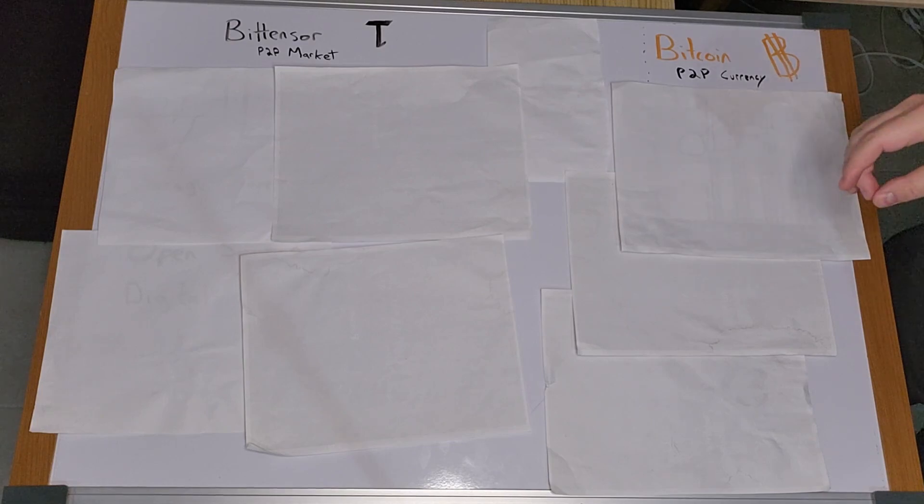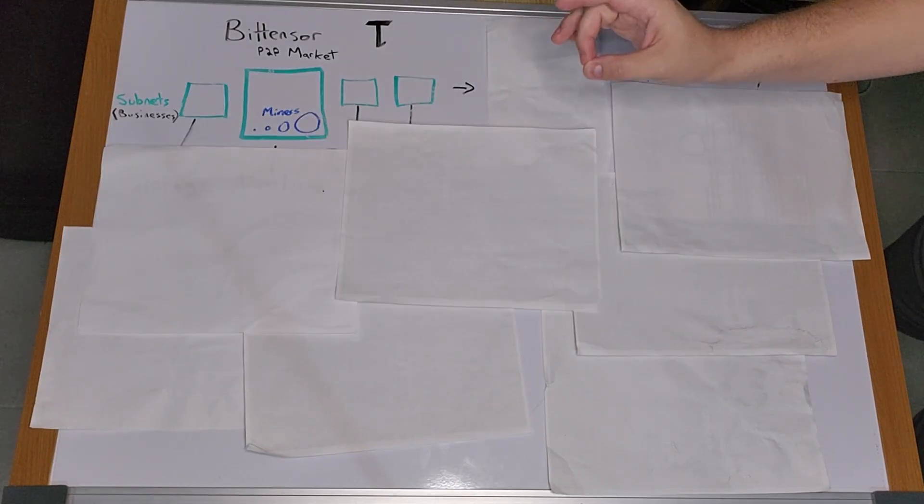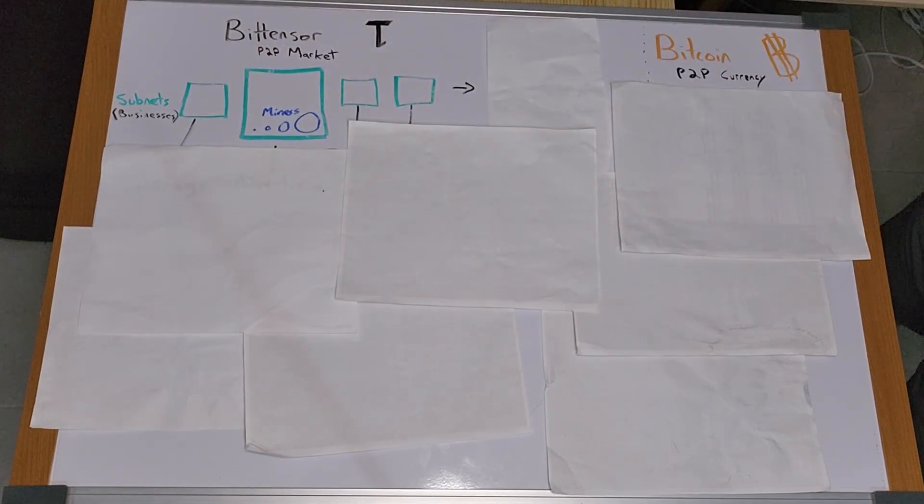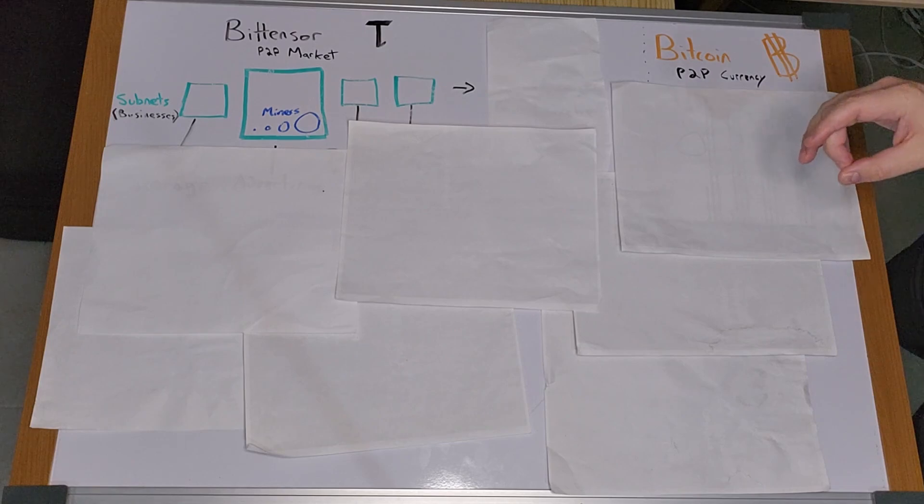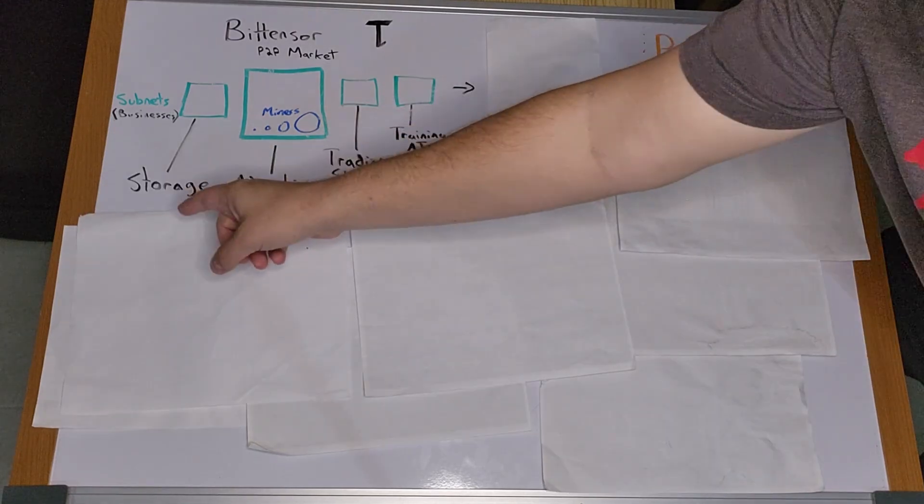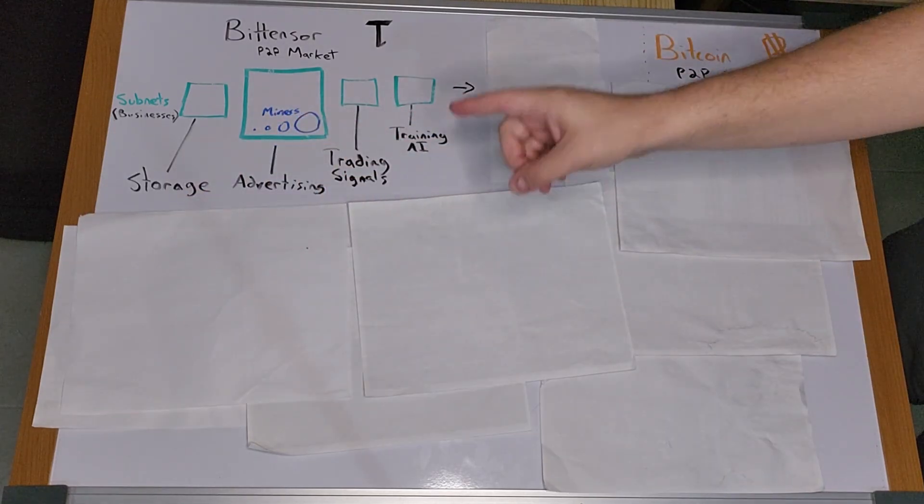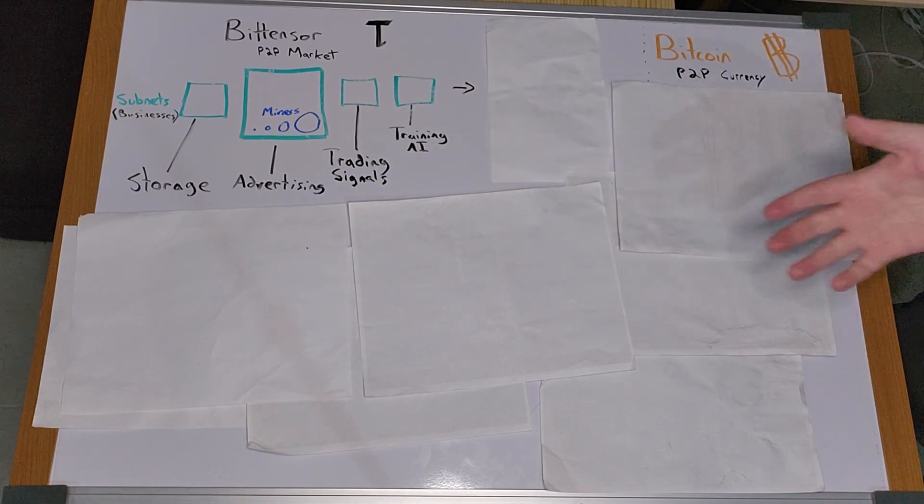Take a look at my other videos for more depth on how mining works. But as a quick high level, BitTensor has an ever-increasing number of subnets. Subnets are essentially decentralized businesses that produce digital commodities, like decentralized storage, advertising, trading signals, training AI, and many more.